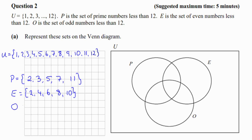And O is the set of odd numbers less than 12. 1, 3, 5, 7, 9 and 11.